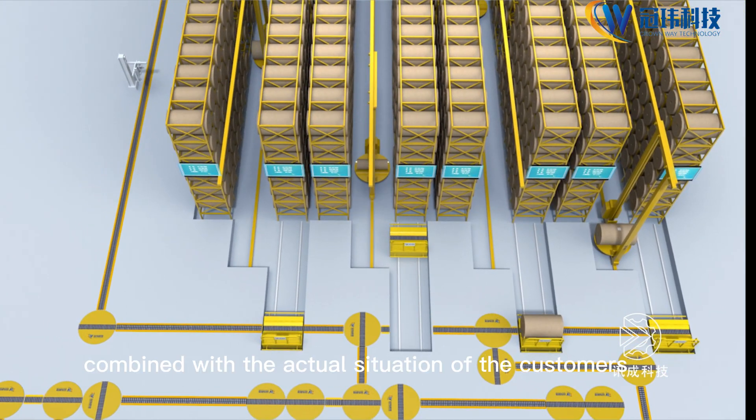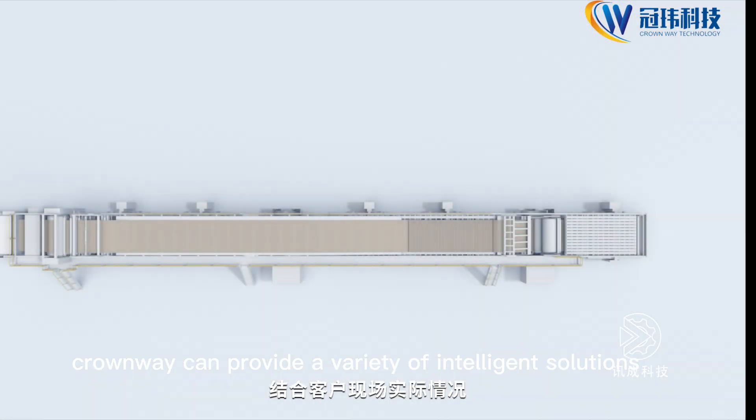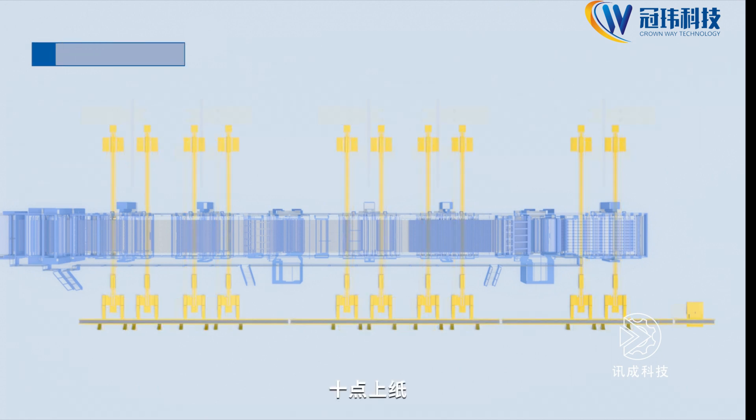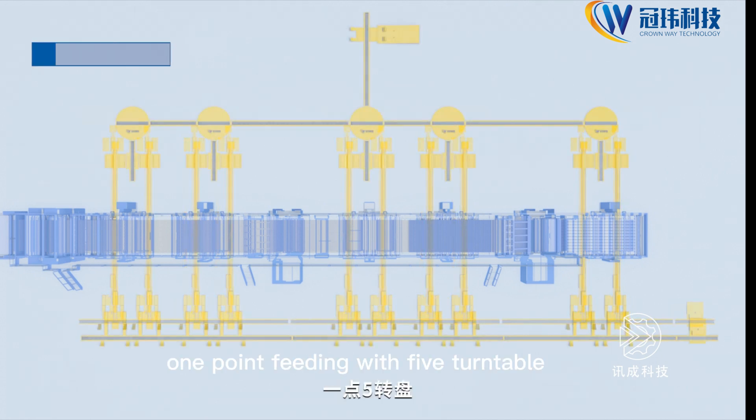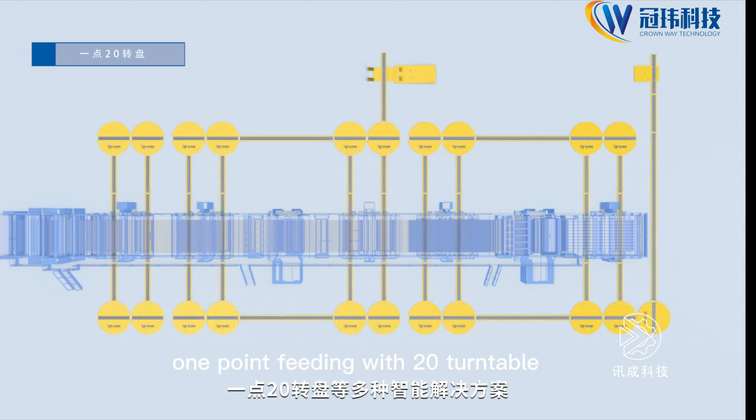Combined with the actual situation of the customer's factories, Groundway can provide a variety of intelligent solutions such as 5-point paper uploading, 10-point paper uploading, 1-point feeding with 5 turntable, and 1-point feeding with 20 turntable.